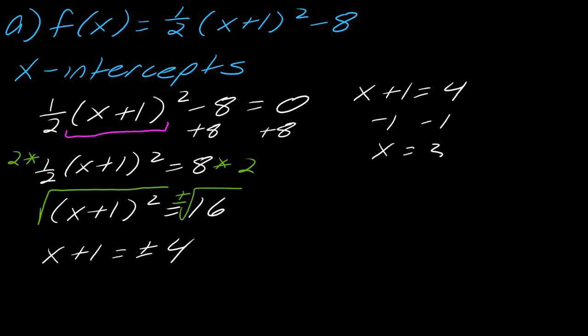I have to solve this for when this equals positive 4, and I can do that just by subtracting the 1. So my first x-intercept is at x = 3. And then I have to also solve this for when this equals -4. Subtract the 1, I get x = -5. So I have (3, 0) and (-5, 0). Those are my two x-intercepts in this case.